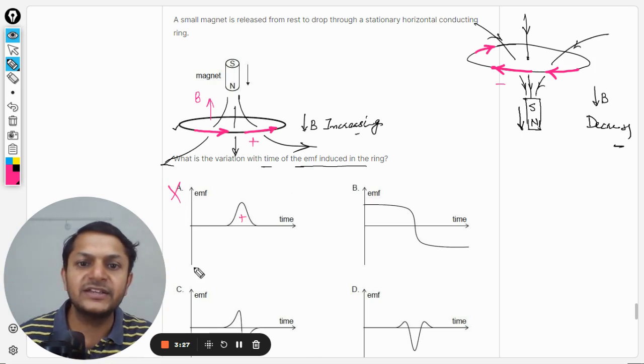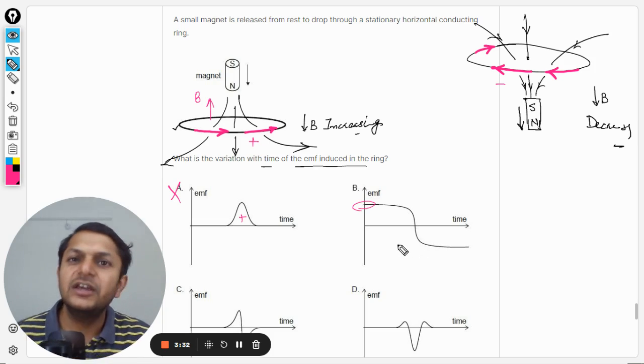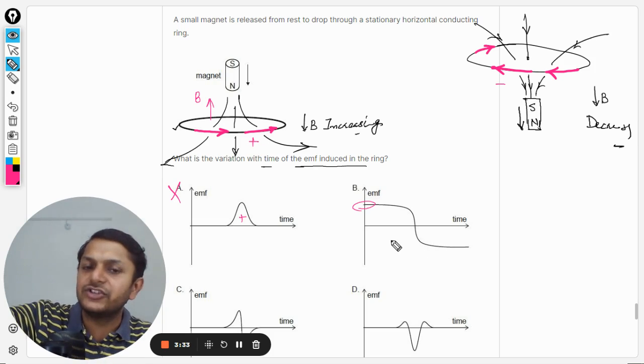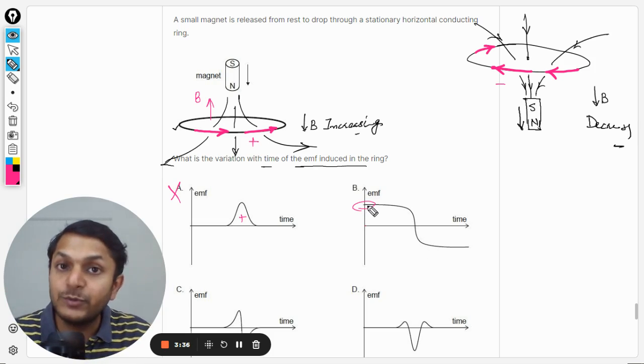In B, initially it is not zero but it has to be zero initially because it is at rest at the initial level. So when the time starts, the EMF should be zero, so B is wrong.